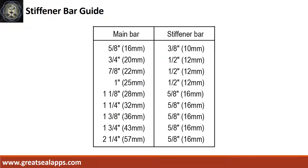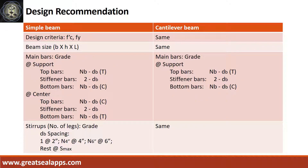Stiffener bar guide for different sizes of main bars used in design. The design recommendation format is as follows: simple beam — design criteria, beam size, main bars including support and center section, and stirrups. Cantilever beam follows the same format as simple beam but without the center section.